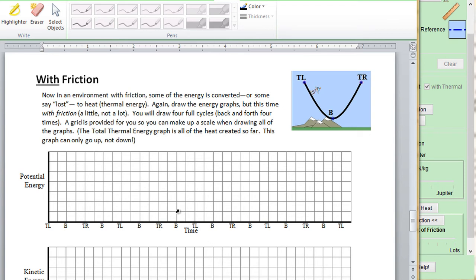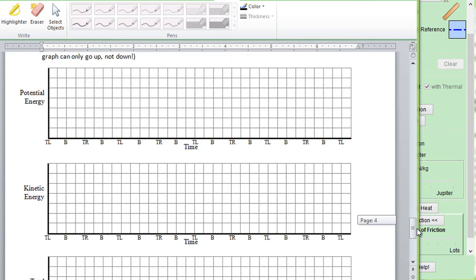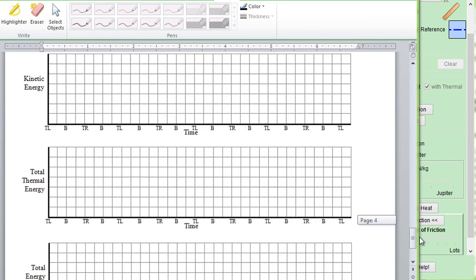So going back to our handout for the lab, on the last page we are doing it with friction. So the graphs are going to look similar, but as you can see from the simulation, the potential energy will be decreasing over time. The maximum potential energy will decrease over time as he goes less and less high. And his maximum kinetic energy will be decreasing over time.